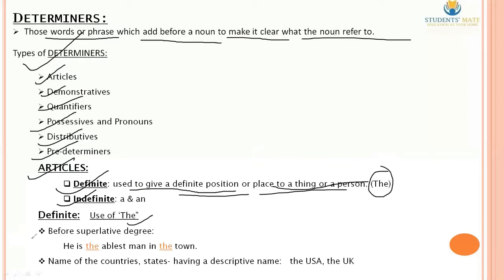The definite article 'the' is used before superlative degree. There are three types of degree: Positive degree, Comparative degree, and Superlative degree. For example: 'He is the ablest man in the town.'